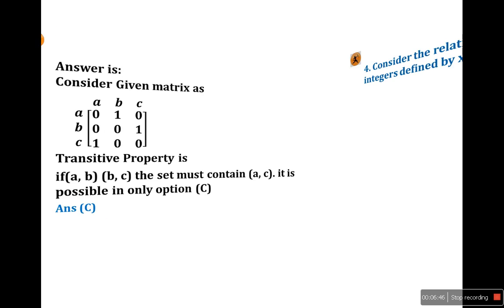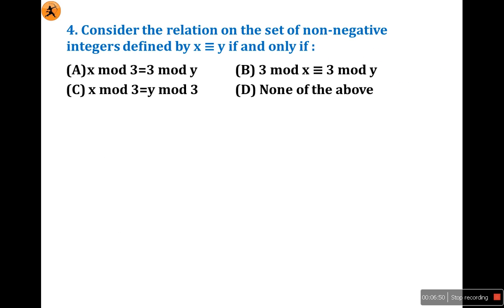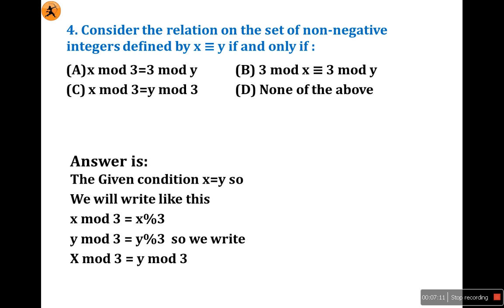Fourth question: consider the relation on the set of non-negative integers defined by x = y if and only if... The options are: x mod 3 = 3 mod y, 3 mod x = 3 mod y, x mod 3 = y mod 3, or none of the above. The condition x = y means x mod 3 = y mod 3. So the answer is option C.